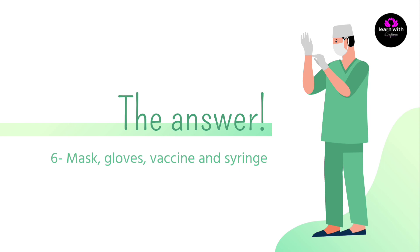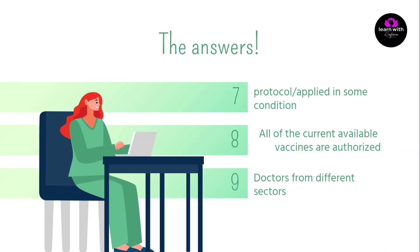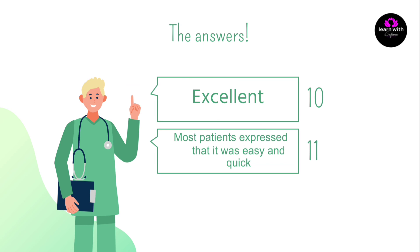Number five: KSA — المملكة العربية السعودية. Number six: Mask, gloves, vaccine, and syringe — القناع والقفازات، اللقاح والحقن. الخانة السابعة: Protocol applied in some conditions — بروتوكول يطبق في بعض الحالات. الخانة الثامنة: All of the certain available vaccines are authorized — جميع اللقاحات المتوفرة حالياً مرخصة. Number nine: Doctors from different sectors — الأطباء من جميع القطاعات. Number ten: Excellent — ممتاز.